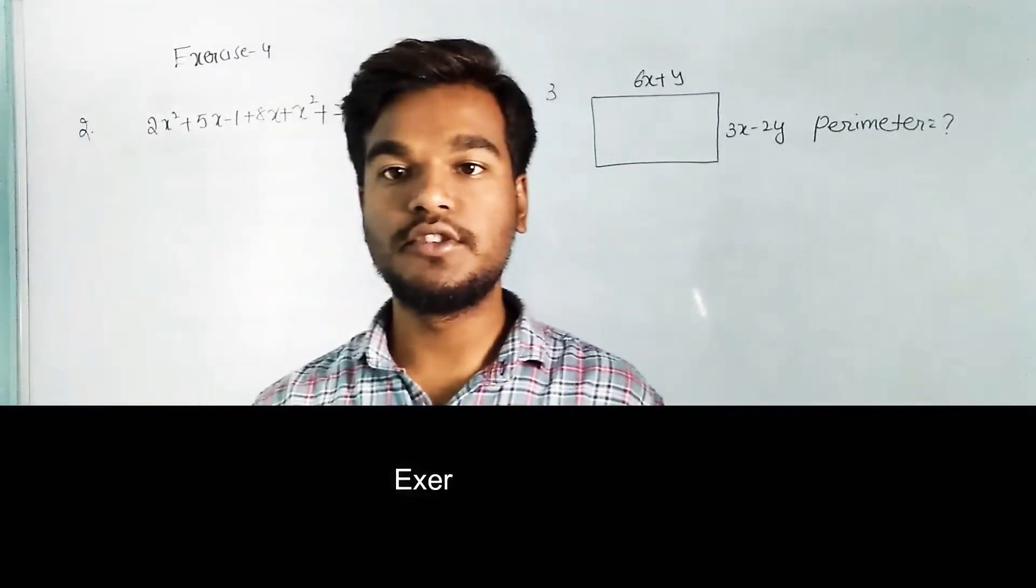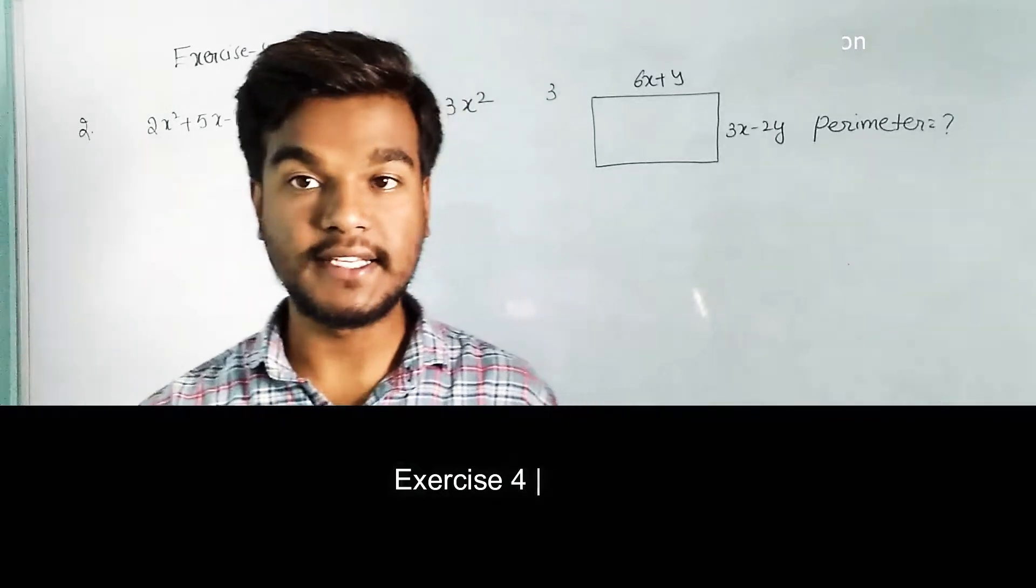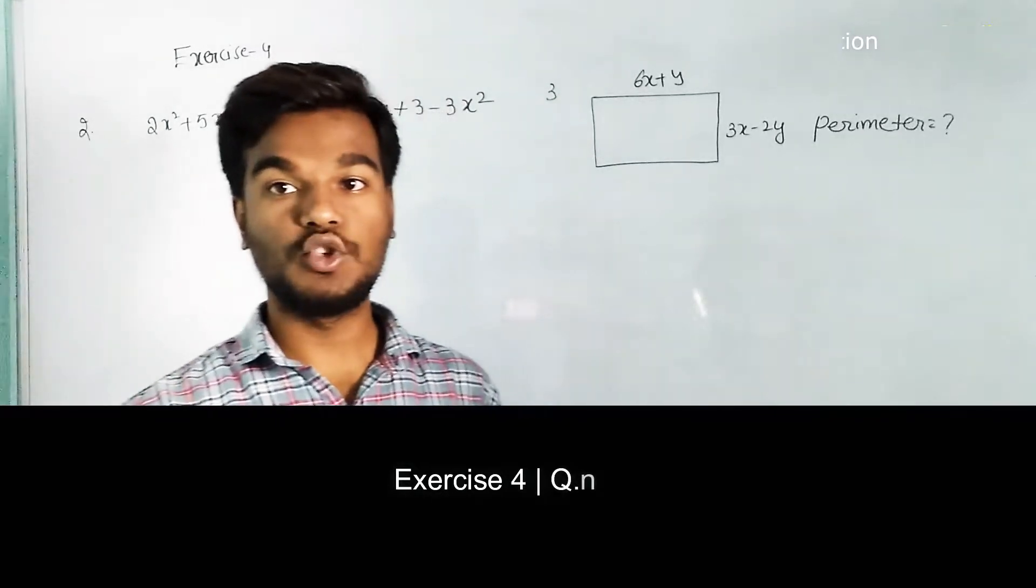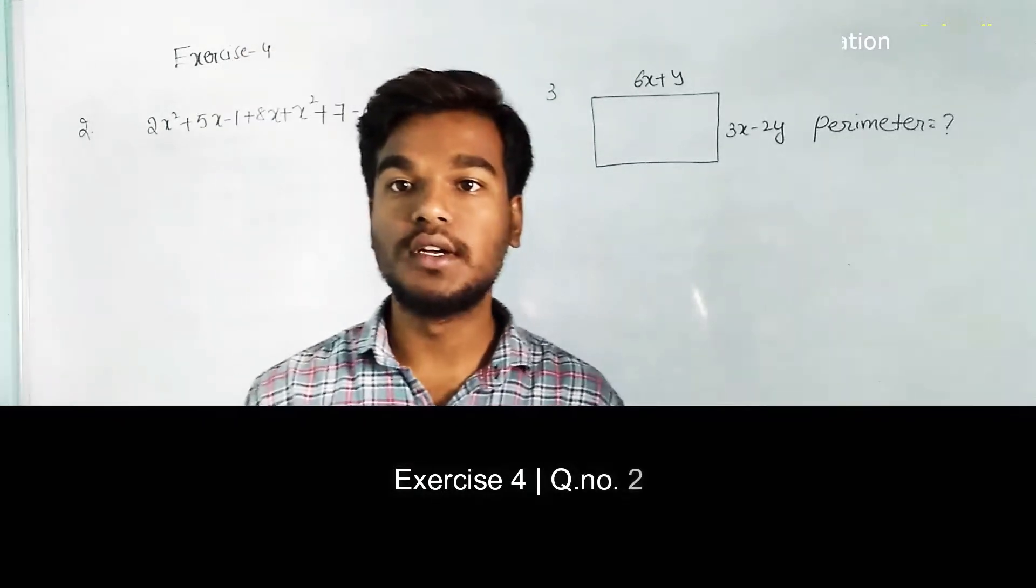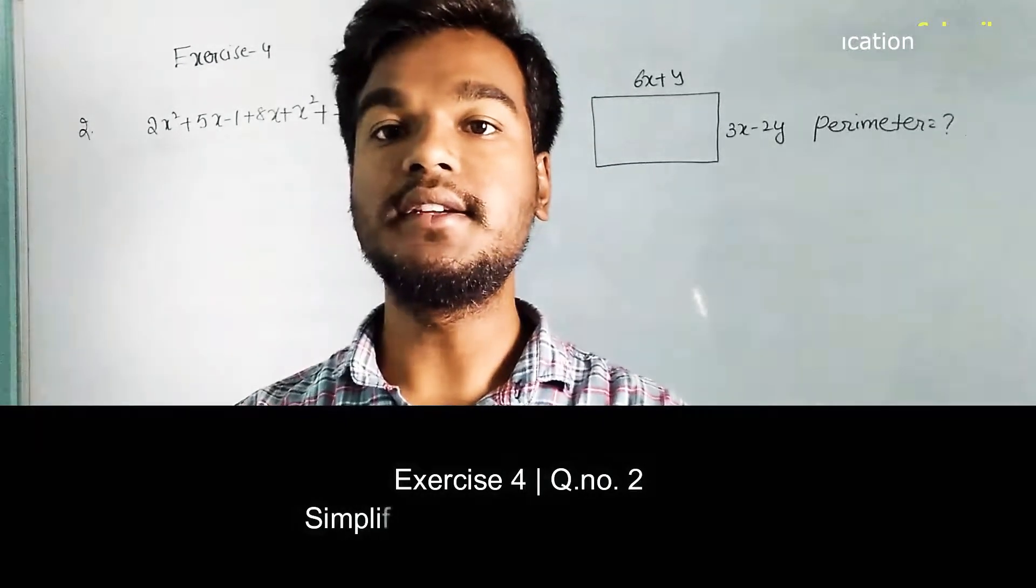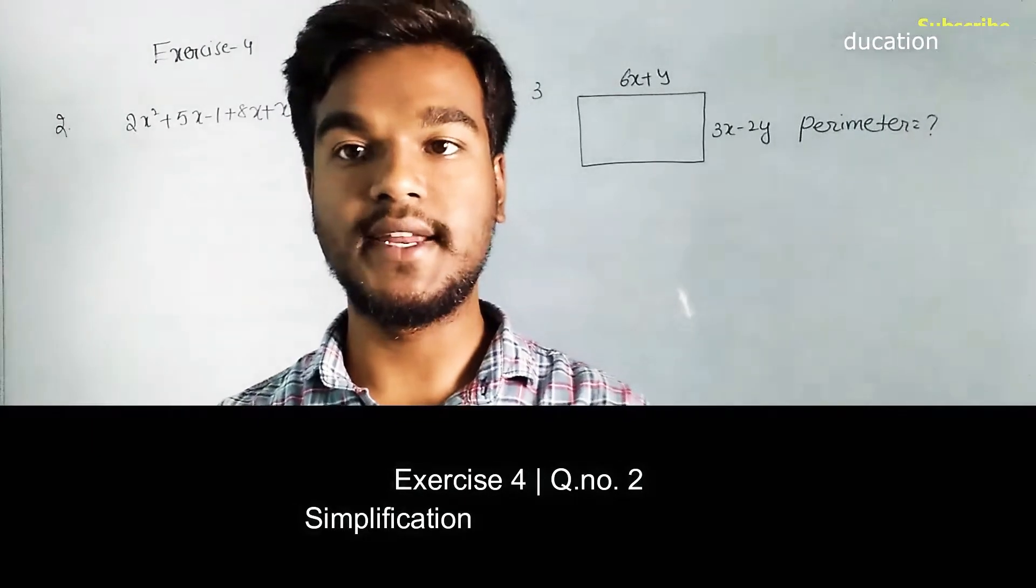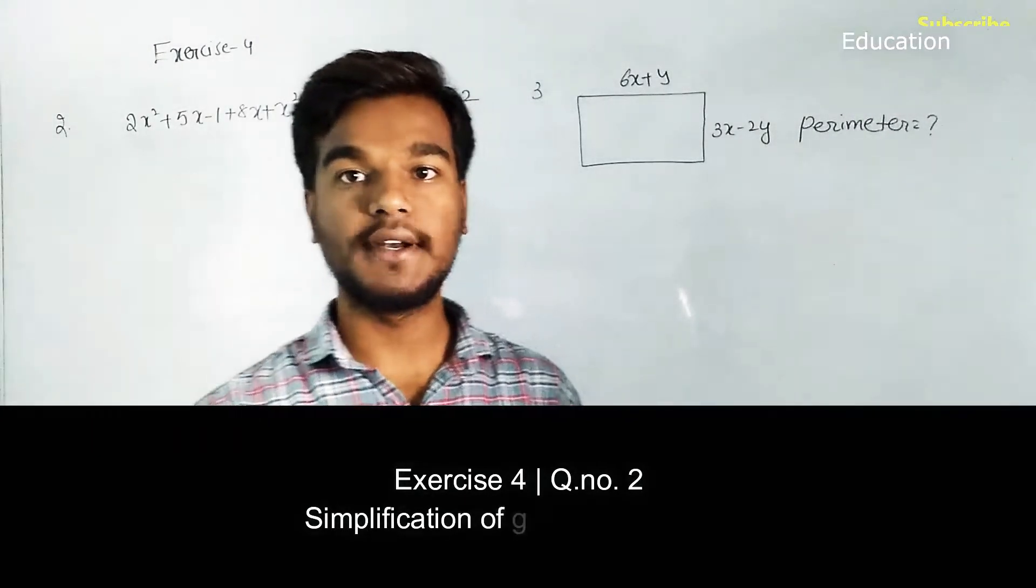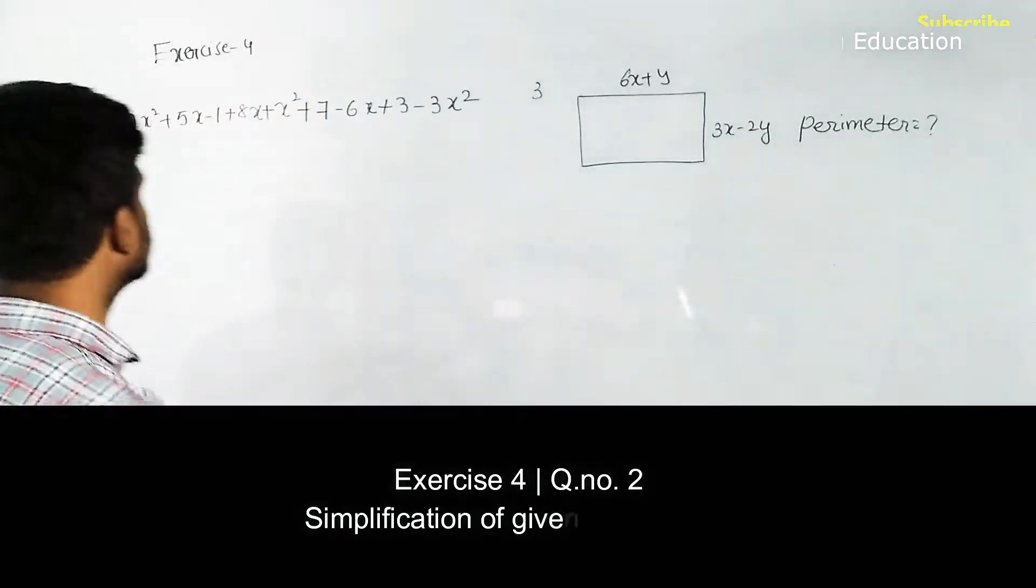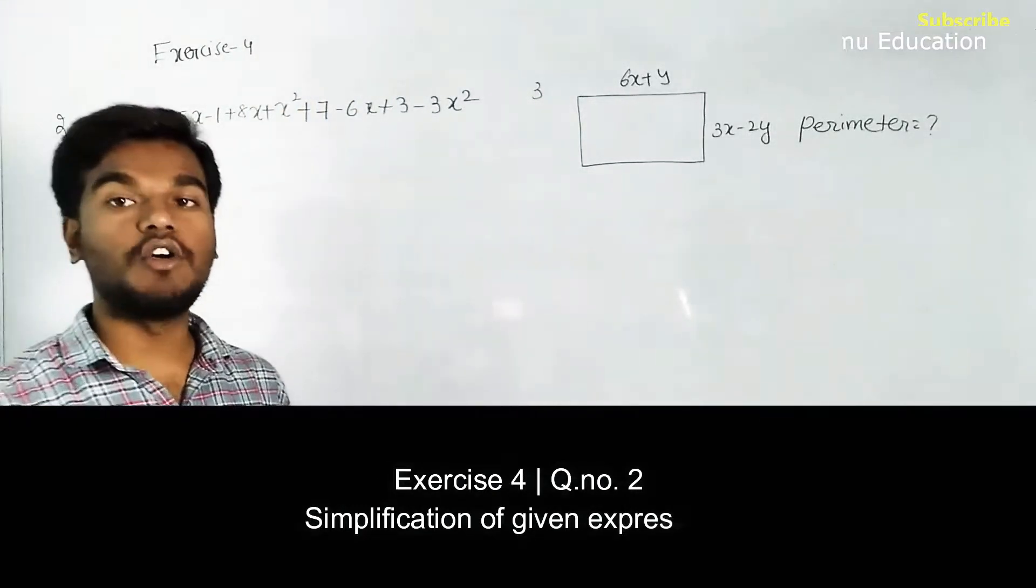Hello viewers, in this module we're going to discuss the solutions for second and third questions in exercise 4. The second question asks us to simplify the given expressions. First you have to write all the terms so that like terms are in the same place in order to simplify easily.